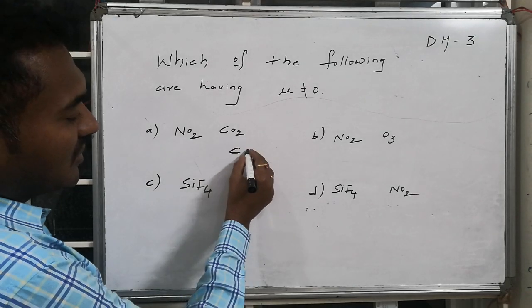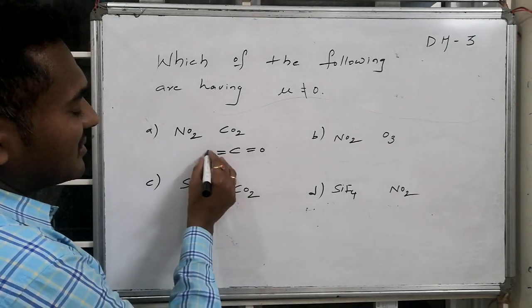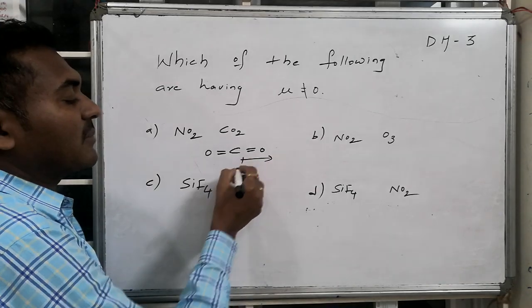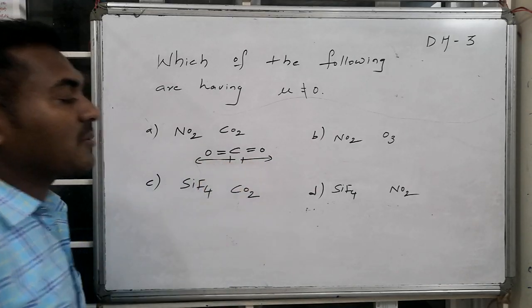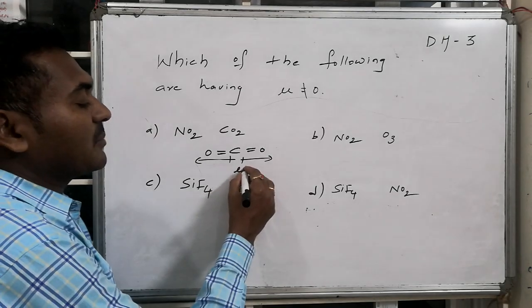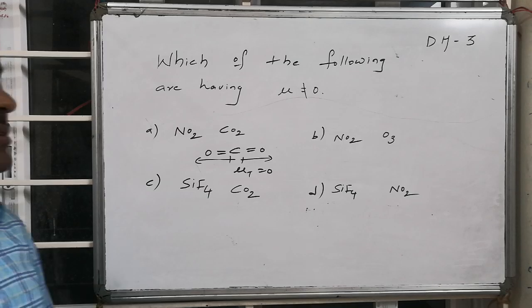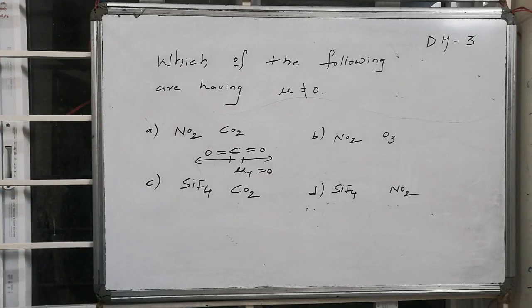As we know, CO₂ has a linear structure in which the dipole moment of one bond magnitude-wise becomes equal to the magnitude of the other C=O bond. The net dipole moment becomes equal to zero because the angle is 180 degrees, so they cancel with one another.